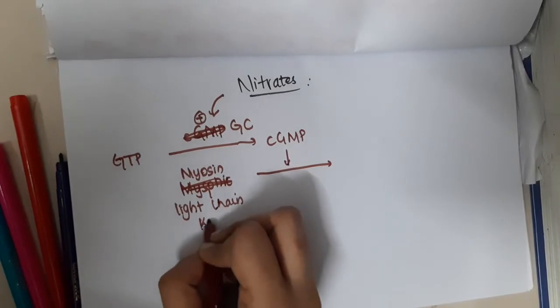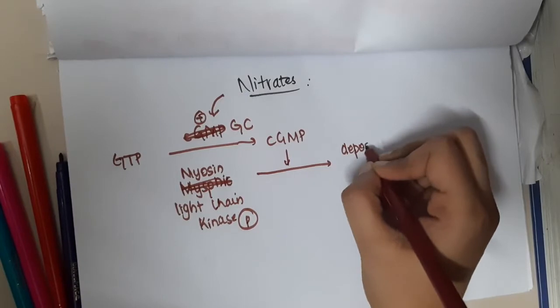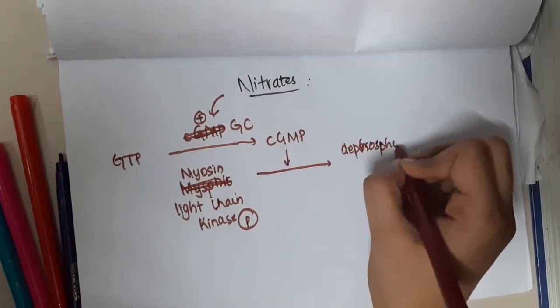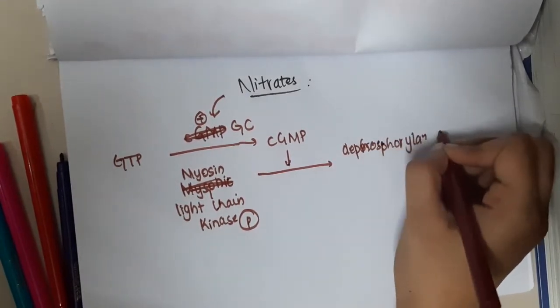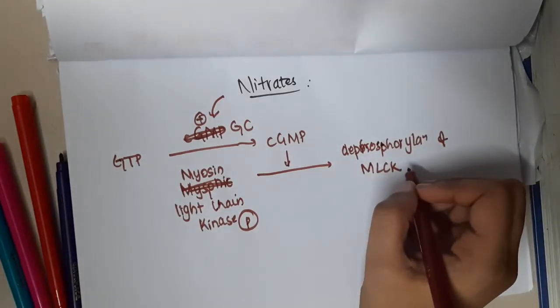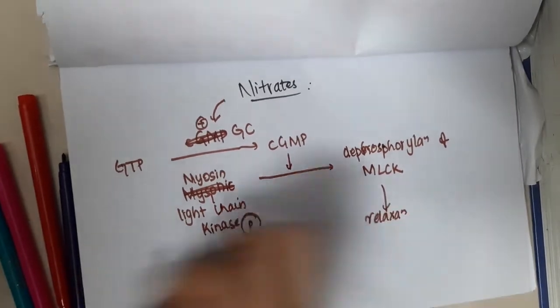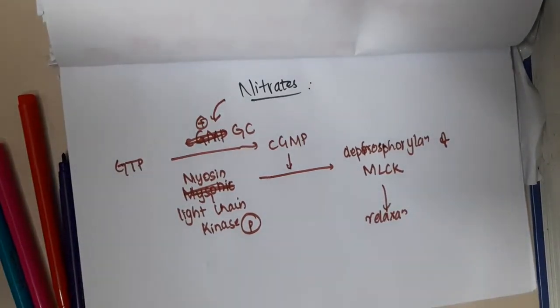It causes myosin light chain kinase, which is phosphorylated, to undergo dephosphorylation. Because of dephosphorylation, it causes relaxation. This is the mechanism of action of nitrates.